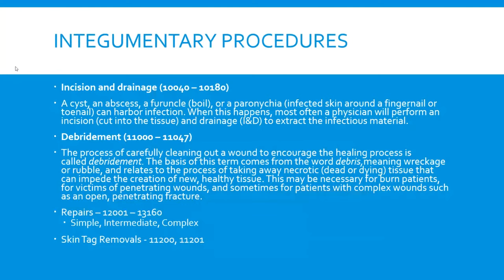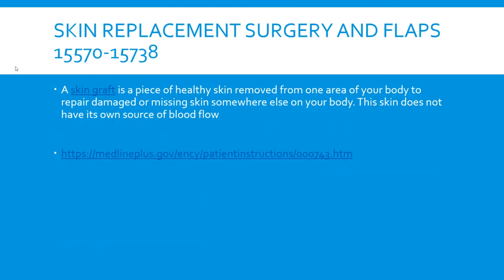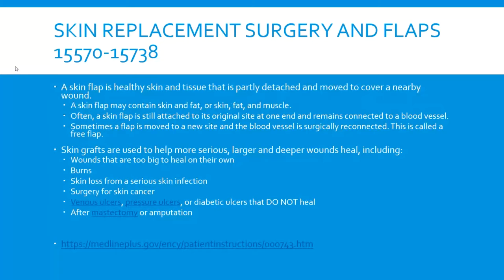Other integumentary system procedures: you'll be coding an incision and drainage, probably of a cyst, a pilonidal cyst, and debridement. I've got the code sections listed there where they reside. That's cleaning of the wound to encourage healing. Repairs and skin tag removals, which are pretty straightforward and easy to code. You're going to need to know just some of the basics of a skin graft procedure and where the codes reside. That is where a piece of healthy skin moves from one area of the body to another that's damaged or missing for healing, and the skin does not have its own source of blood flow — that's where the graft comes in.